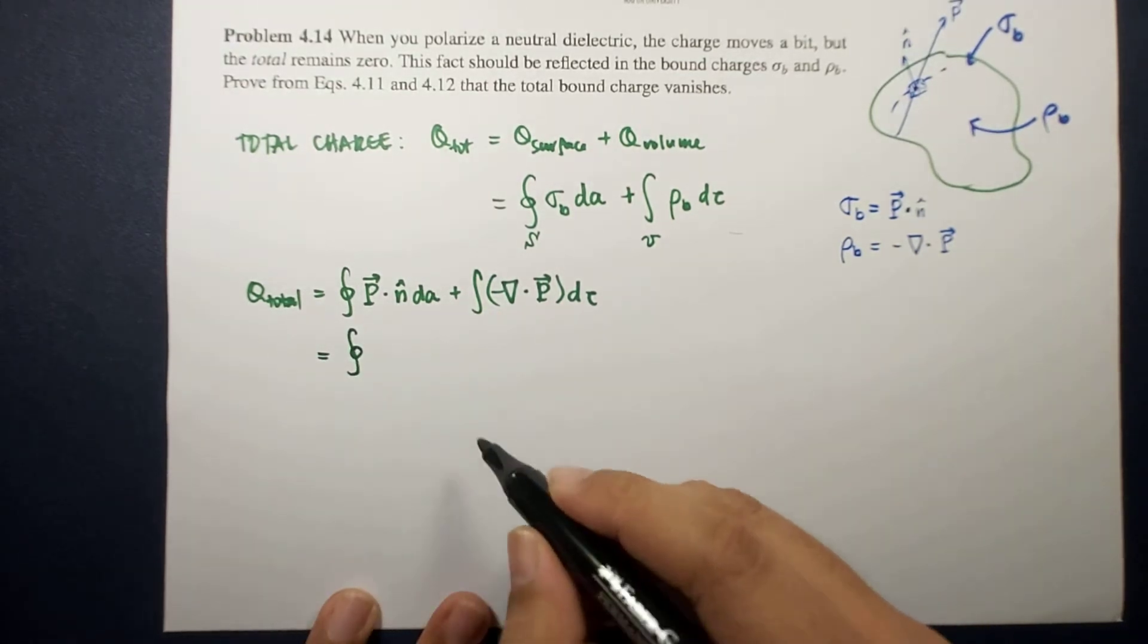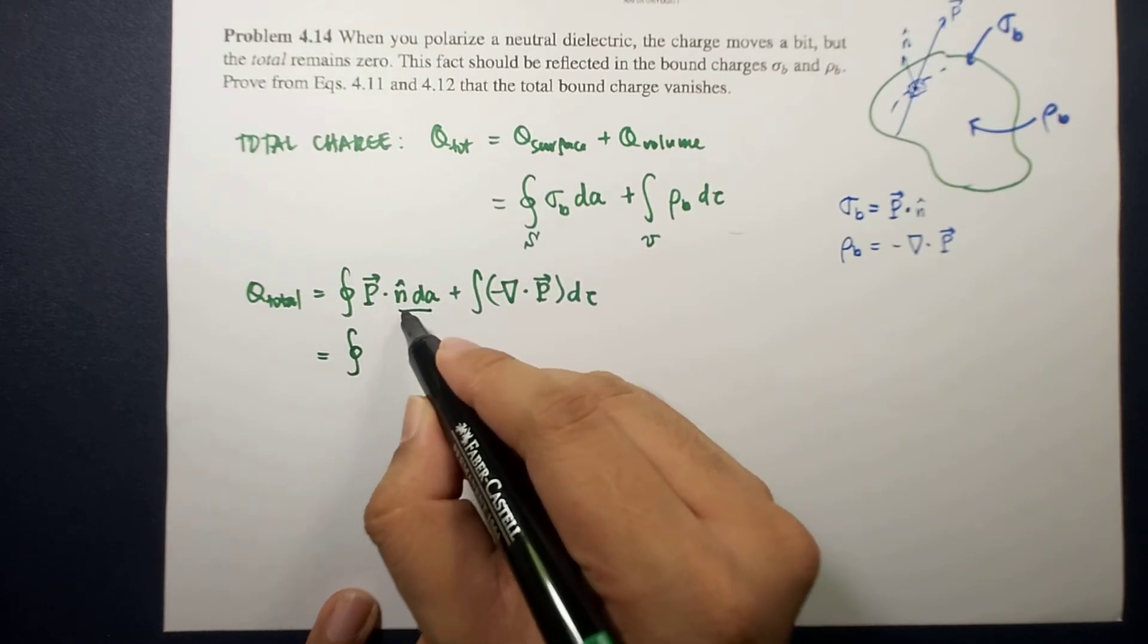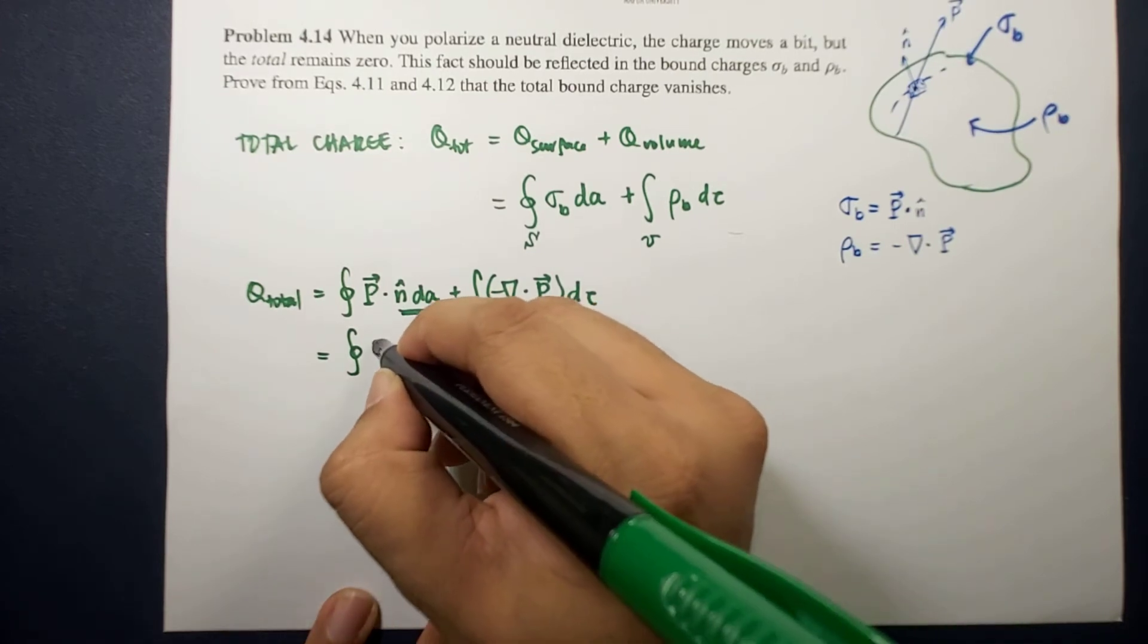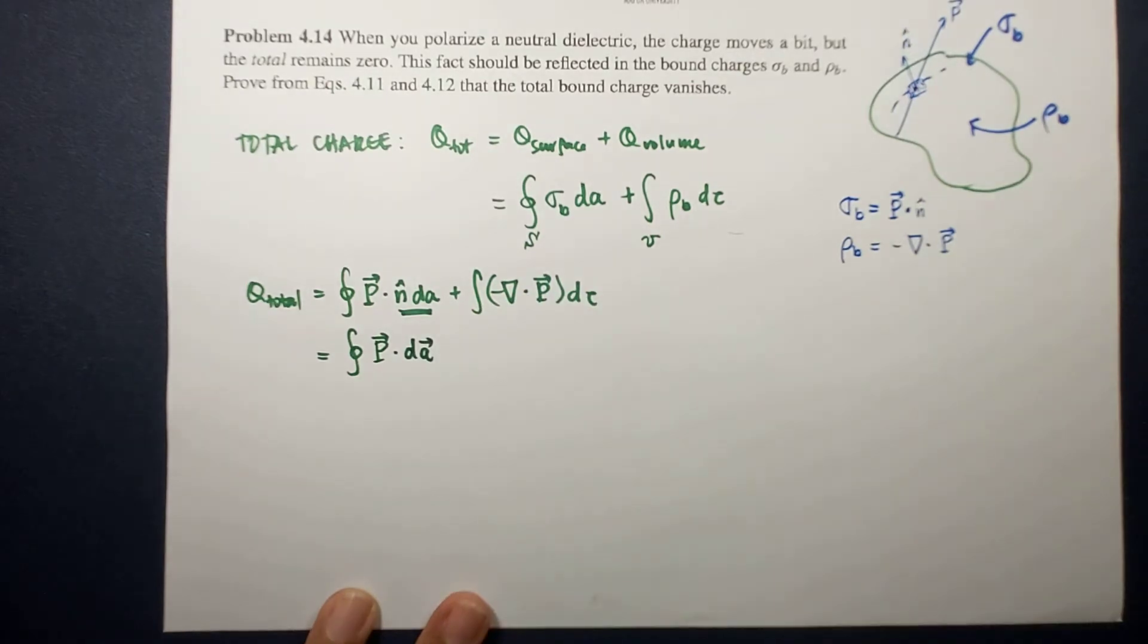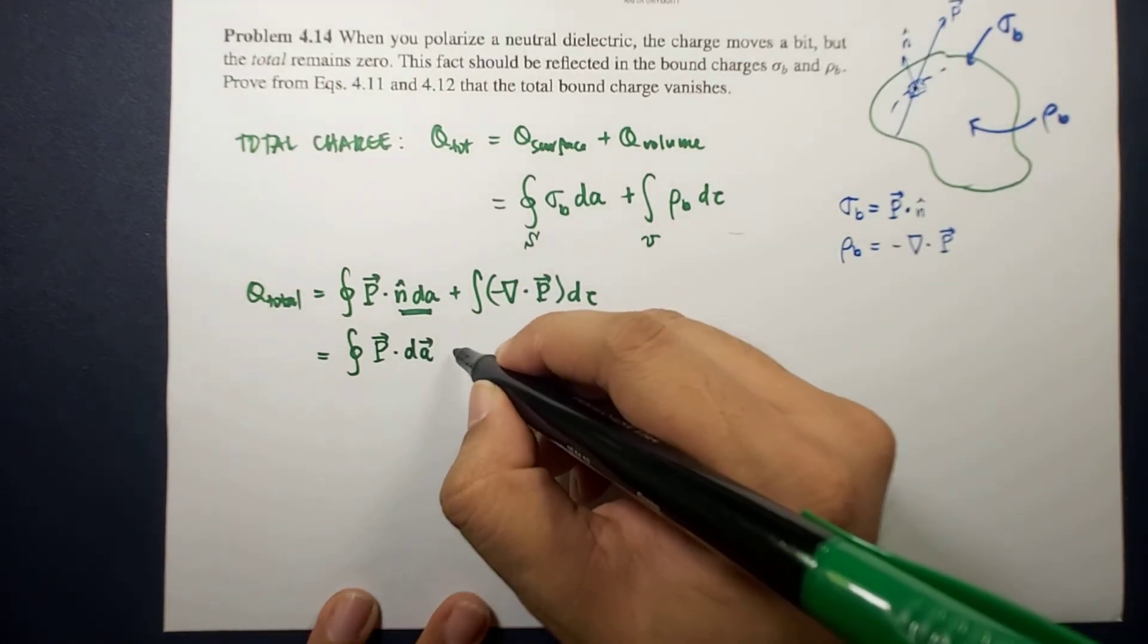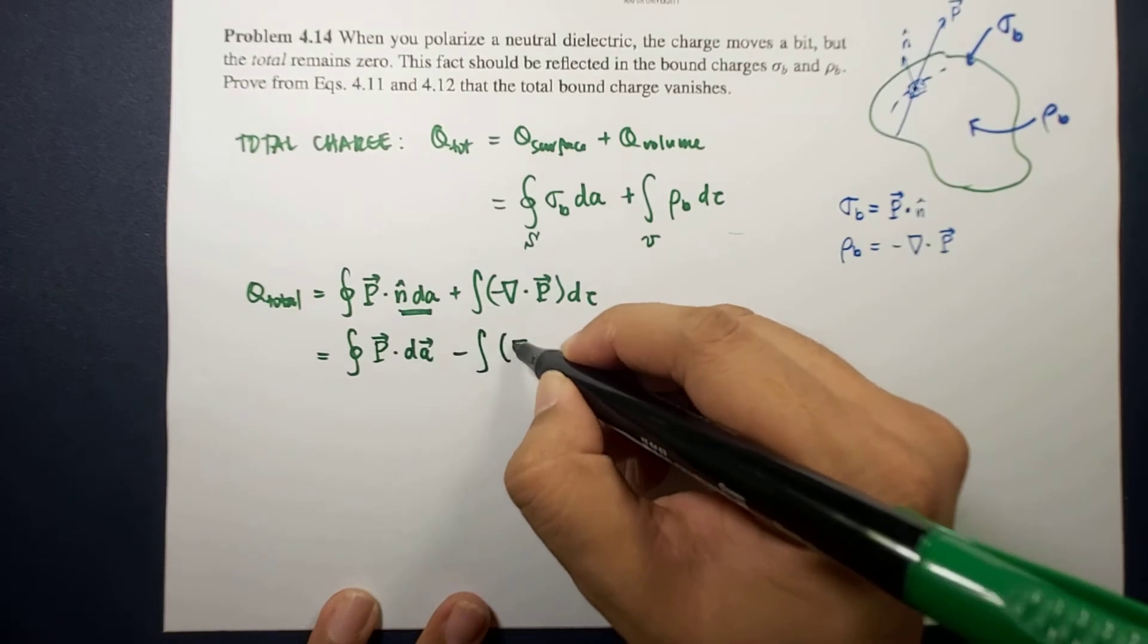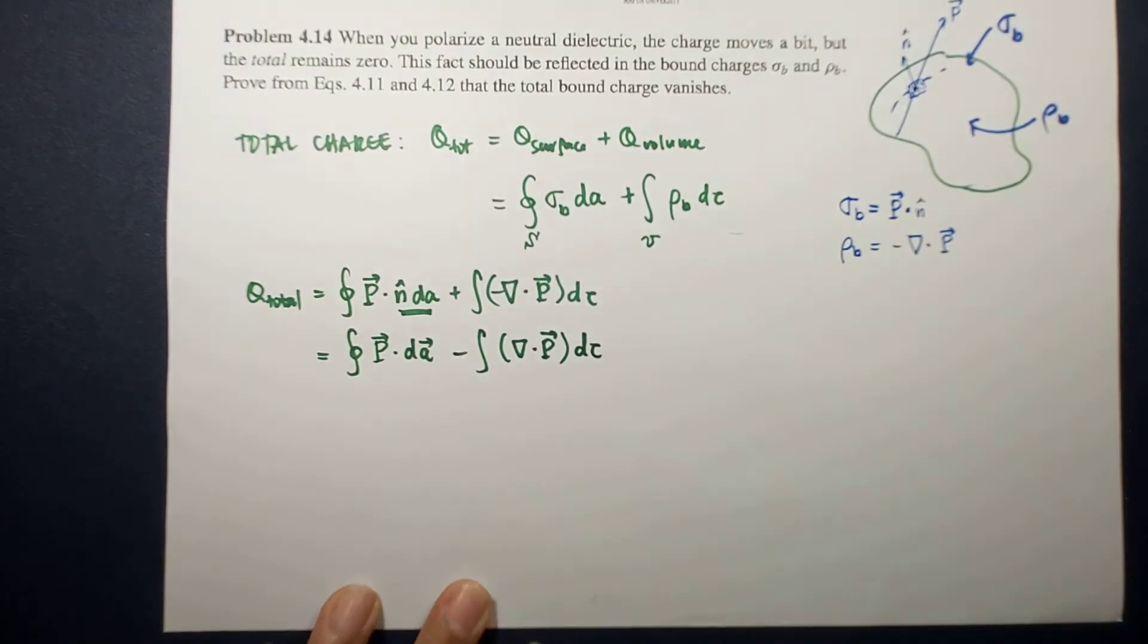This is the closed integral of P dot n-hat dA. You know that n-hat dA is just your element area vector, so this is P dot dA area. And this is minus the divergence integral of the divergence of P dV.